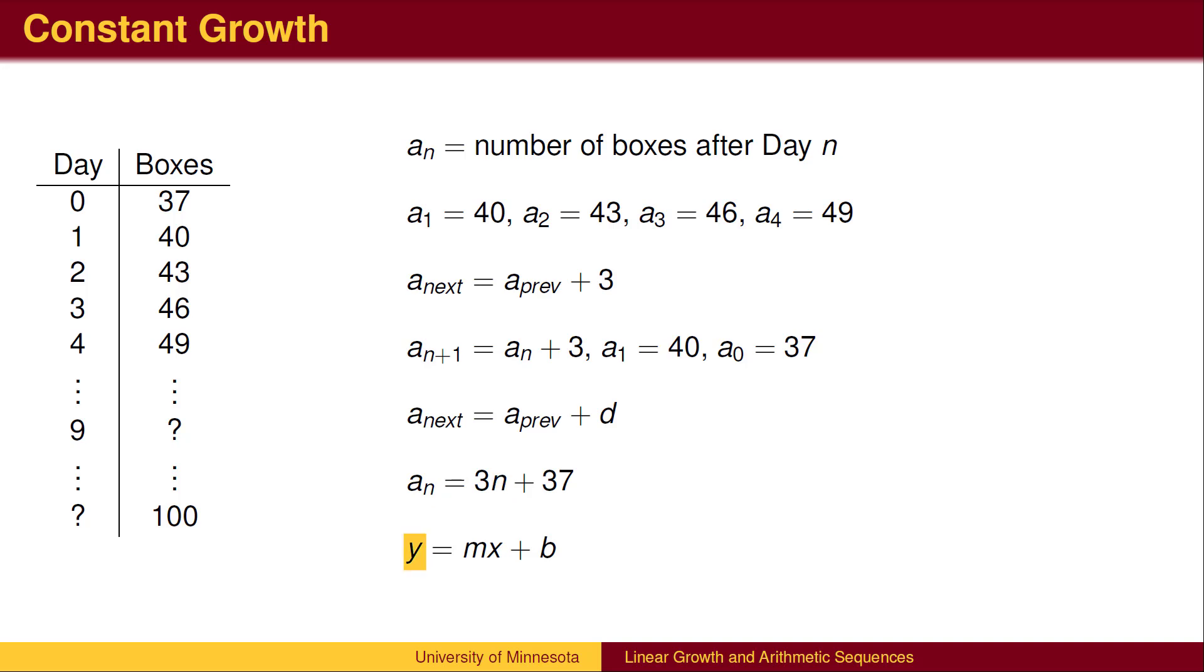The output of a linear function is typically y. In the sequence notation, it is a_n. The y-intercept is where the line starts, so b is similar to the initial term a_0. In the sequence, each term goes up by the common difference d, so d is equivalent to the slope of the line.